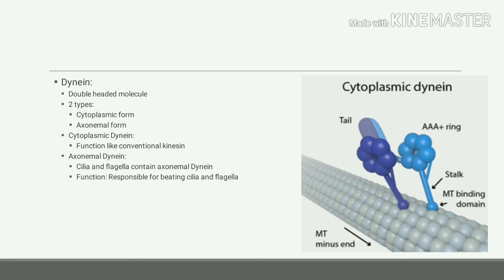Axonemal dynein is present in the cilia and flagella, so cilia and flagella contain dynein-based molecular motors. The function of axonemal dynein is that it is responsible for the beating of cilia and flagella.